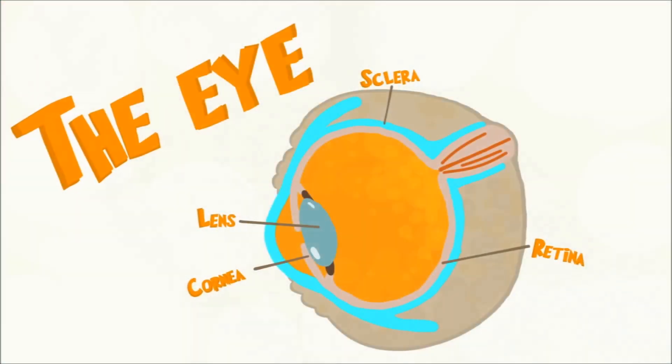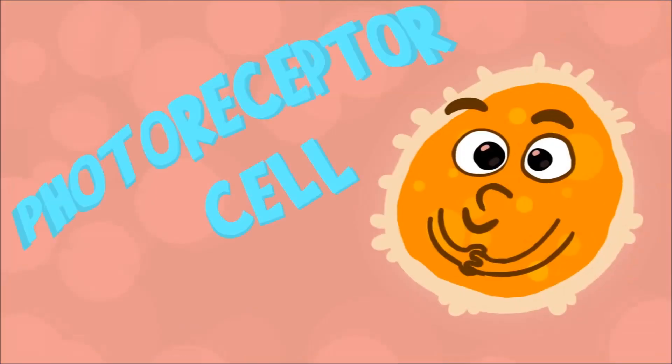It's not ideal for the human eye to have a blind spot where the optic nerve exits the retina, but that's how it developed, starting from a simple photoreceptor cell.